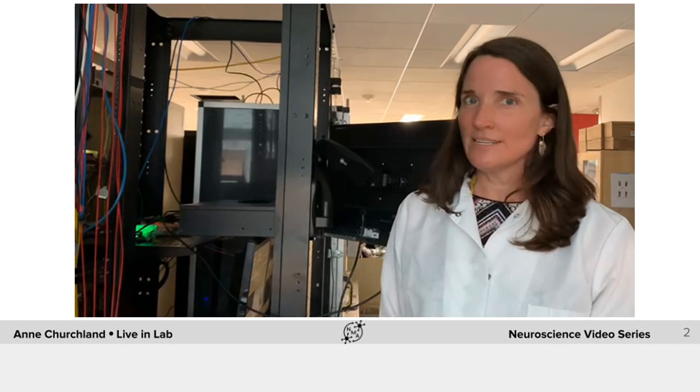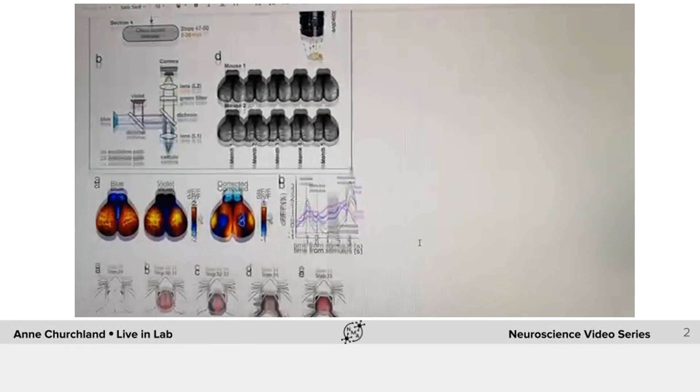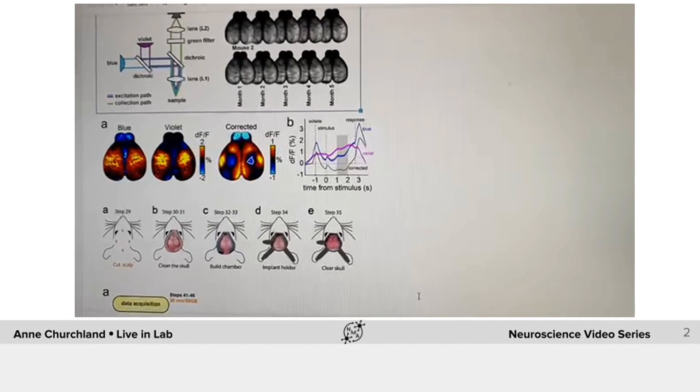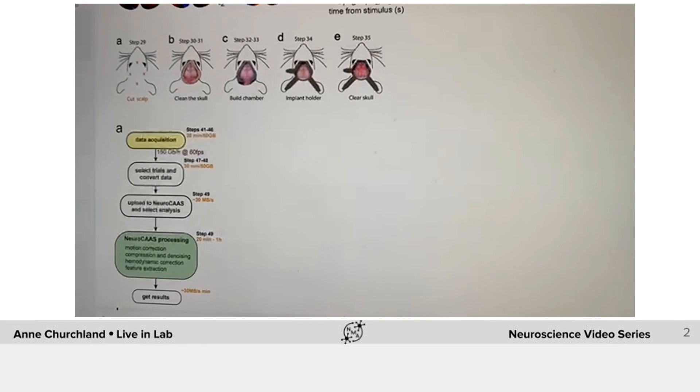But one last thing. So Joao, if people are interested in building a wide-field imaging setup, are they kind of just left to their own devices? Are there any resources they could use to help speed things along? Oh, I forgot about that. So we actually have a protocol where we explain how to build a microscope, but also how to do hemodynamic correction and make a skull preparation so that one can image from the entire dorsal skull of the mouse. We also discussed some steps that we can do to analyze data on the cloud.